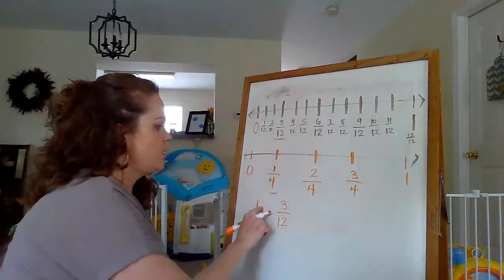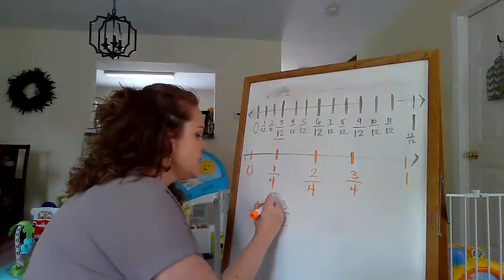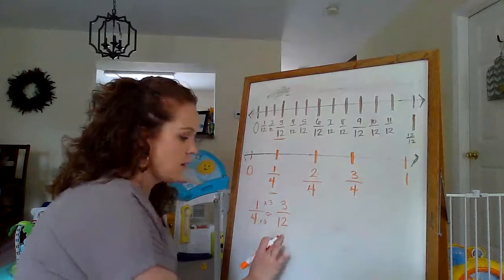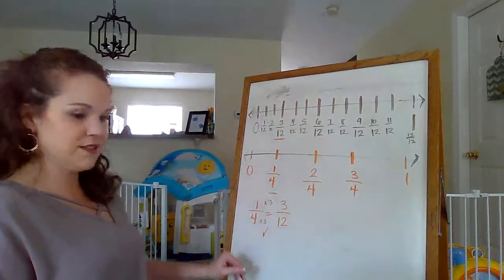So let's see if it works. So I know 1 times what is 3? Three. 1 times 3 equals 3. Oh, good. And then over here, 4 times 3, is it 12? Yes, it is. So these are correct. Yay.